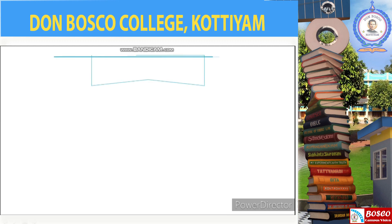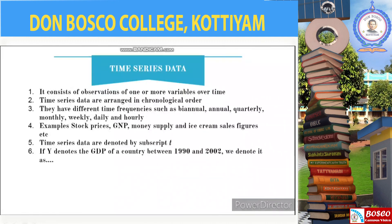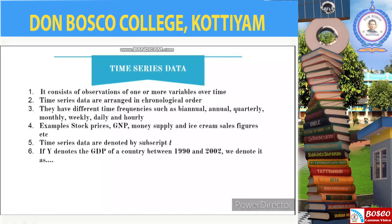Now we will move on to the second type of economic data: time series data. A time series data set consists of observations of one or more variables over time. Time series data are arranged in chronological order and can have different time frequencies such as bi-annual, annual, quarterly, monthly, weekly, daily, and hourly. Examples of time series data include stock prices, gross domestic product, money supply, and ice cream sales figures, among many others.